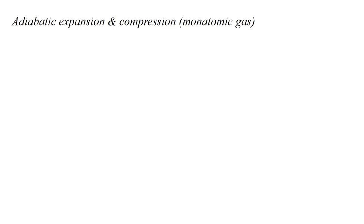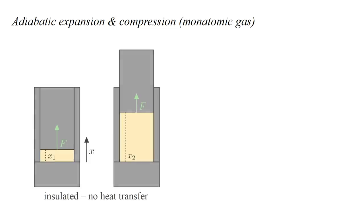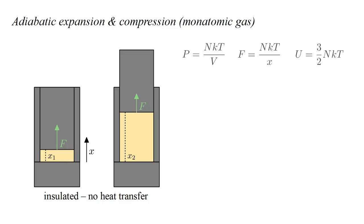There's another way to get free heating and cooling of the gas: adiabatic expansion and compression. In an adiabatic process, the gas is thermally insulated — there is no transfer of heat. Suppose the piston moves from position X-1 to X-2. From the ideal gas law, the pressure equals NKT over V. We multiply by the piston cross-sectional area to get the force, which replaces V with X. The internal energy of a monatomic gas is three-halves NKT. The change in internal energy, dU, equals three-halves NK times the change in temperature, dT.